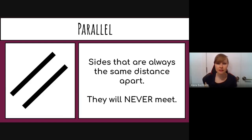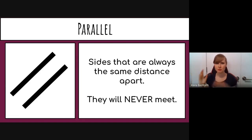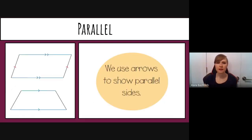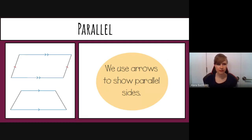Parallel means two sides that are always the same distance apart — even if you extended them to infinity they would never touch because they are at exactly the same angle. When sides are parallel, we use arrows to show that: double arrows match with double arrows, and single arrows match with single arrows.